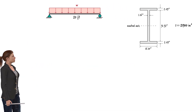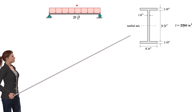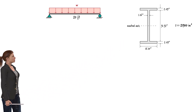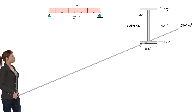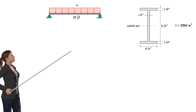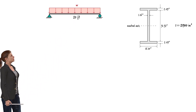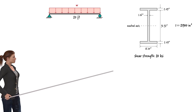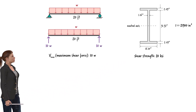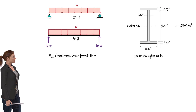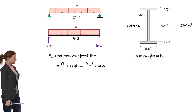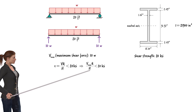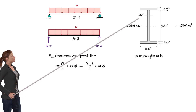Consider a simply supported beam subjected to a uniformly distributed load. The cross-section of the beam is I-shaped. The moment of inertia of the section about the neutral axis is given. We wish to determine the maximum magnitude of the distributed load W that the beam can hold without any shear failure. The shear strength of the material, structural steel, is assumed to be 20 KSI. The shear force reaches its maximum value near the supports, and the maximum shear value equals the magnitude of the support reactions, 10W. The thickness of the cross-section at the neutral axis equals 1.16 inches.